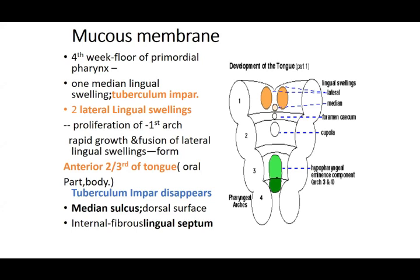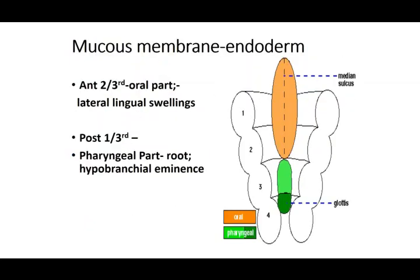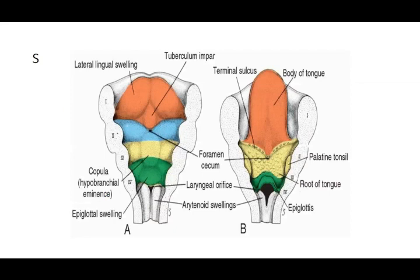Three swellings appear in the first pharyngeal arch: two lateral swellings and one medial swelling. The two lateral lingual swellings progress, grow together, meet, and the tuberculum impar is displaced — forming the body or anterior two-thirds of the tongue. So the anterior two-thirds develops from the first pharyngeal arch and will get its sensory nerve supply accordingly.